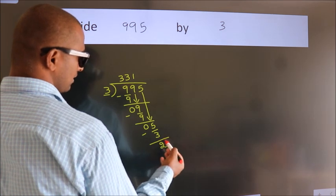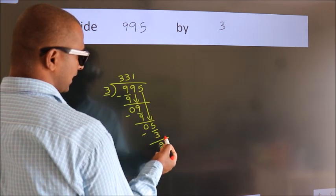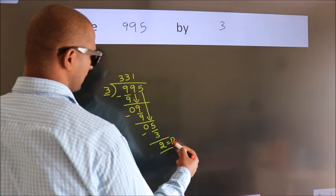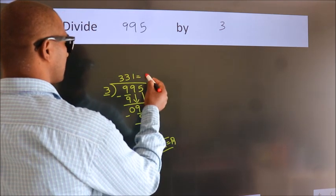After this, no more numbers to bring it down. So we stop here. This is our remainder. This is our quotient.